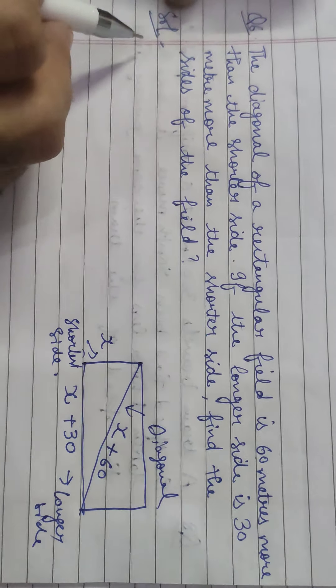We draw a rectangle. Let the shortest side be X. The longer side is 30 meters more than the shortest side, so it equals X + 30. The diagonal equals X + 60.